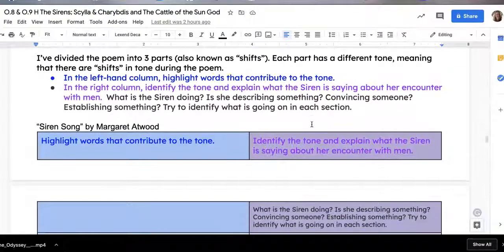I've divided the poem into three parts, also known as shifts. Each part has a different tone, meaning that there are three tone shifts during the poem. On the left-hand column, this part in blue, you're going to highlight words that contribute to the tone. In the right column, the purple column, you're going to identify the tone and explain what the Siren is saying about her encounter with the men. Basically, be observing, what is she doing? Is she describing something? Is she convincing someone? Is she establishing something? Try to identify what is going on in each section.